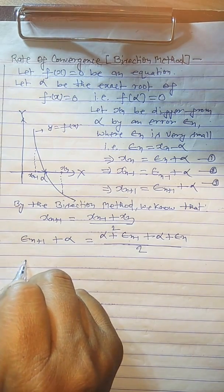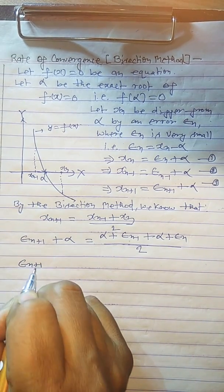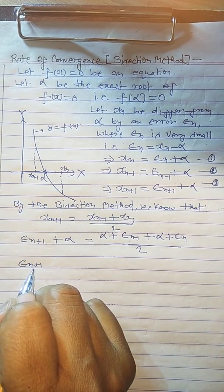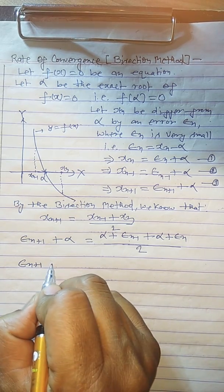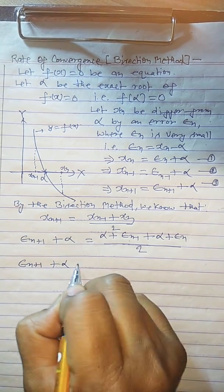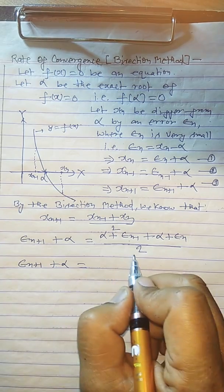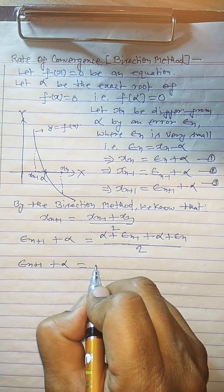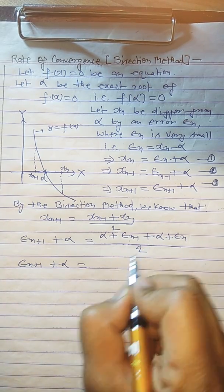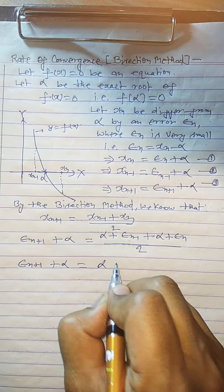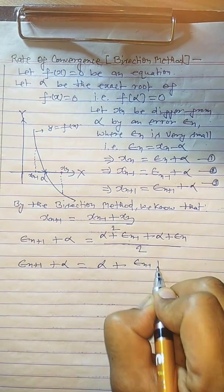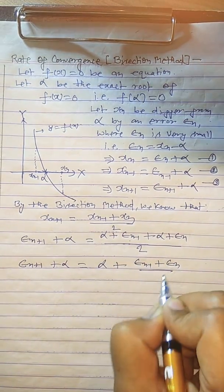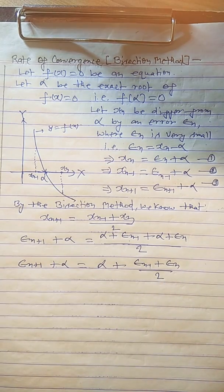Now we simplify this: epsilon_{n+1} + alpha = alpha + (epsilon_{n-1} + epsilon_n) / 2. These two alpha terms cancel out, giving us epsilon_{n+1} = (epsilon_{n-1} + epsilon_n) / 2.